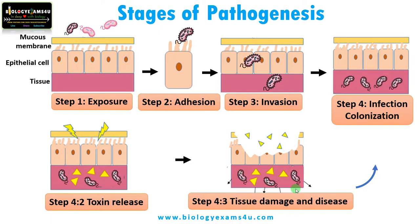Once the tissue damage becomes severe, there will be some disease manifestation. This infection may be local or systemic. Local means — in the case of Staphylococcus aureus that causes hair follicle infection, there will be boils that are localized on specific regions. Urinary tract infection is also a type of local infection restricted to a localized region. When this infection spreads to different organs, multiple organs, or throughout the system, then it is called systemic.